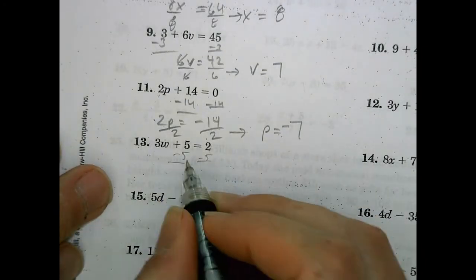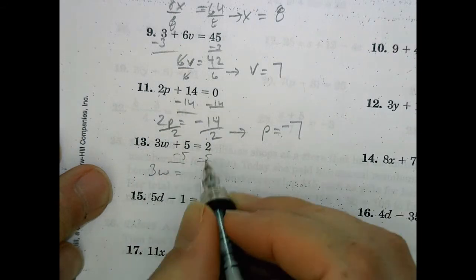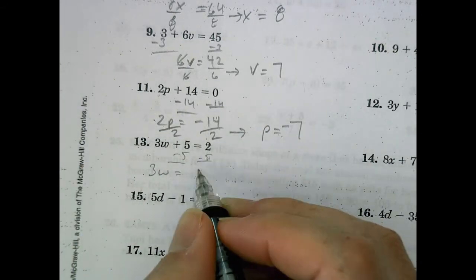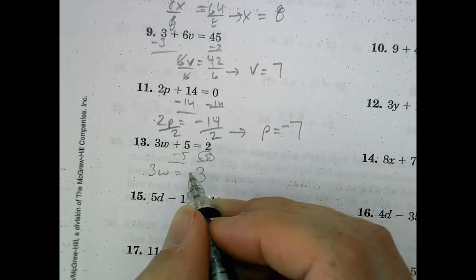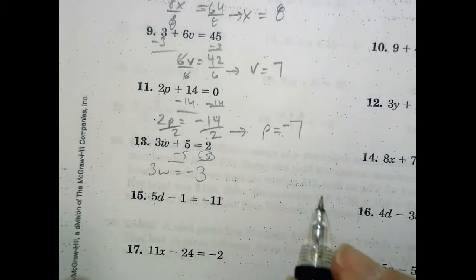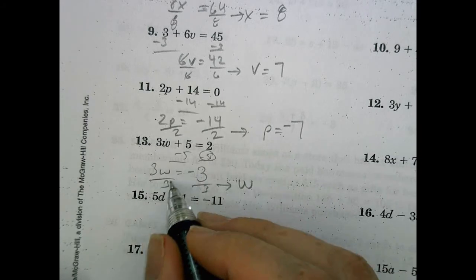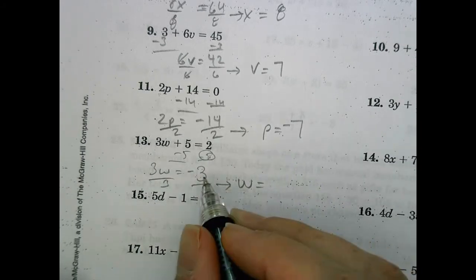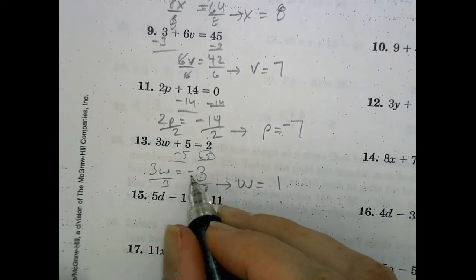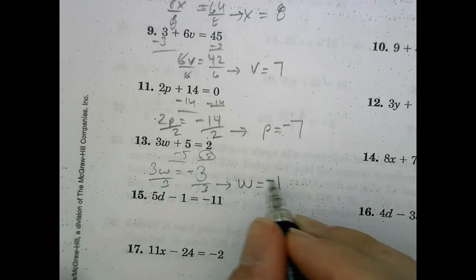Number 13. I'm going to subtract 5, subtract 5. So I have 3w equals, the signs are different. I find the difference and keep the greater absolute value. Negative 3. Divide by 3, divide by 3. So now I'm left on this side. W equals 3 divided by 3 is 1. Negative divided by positive is negative.